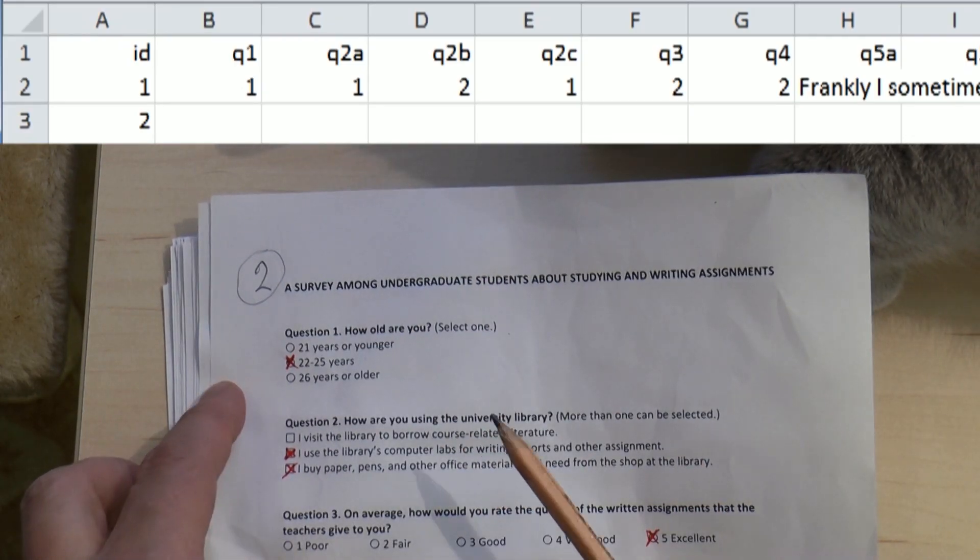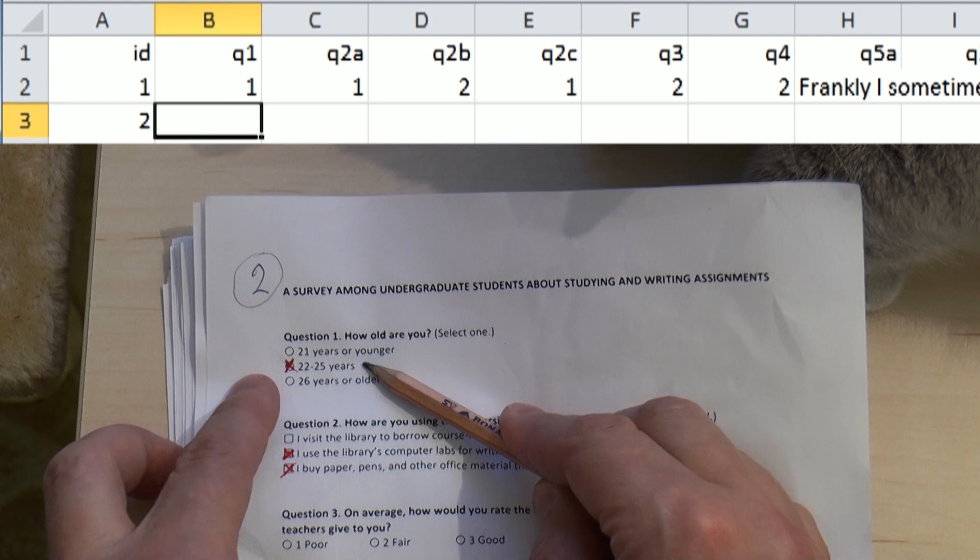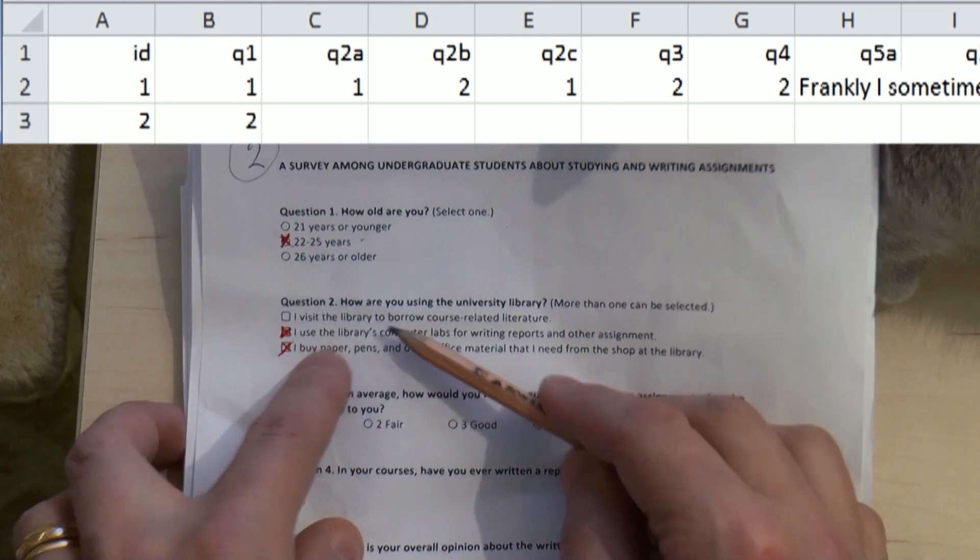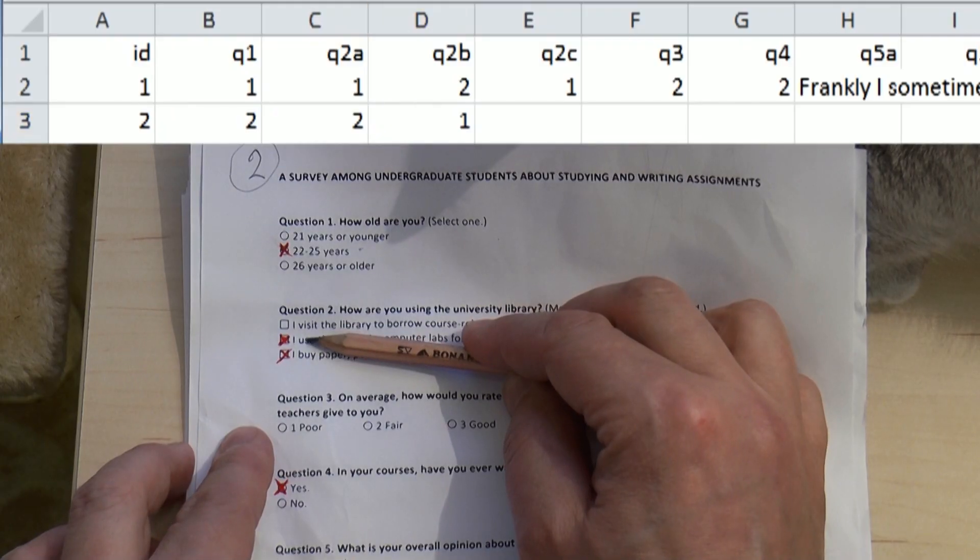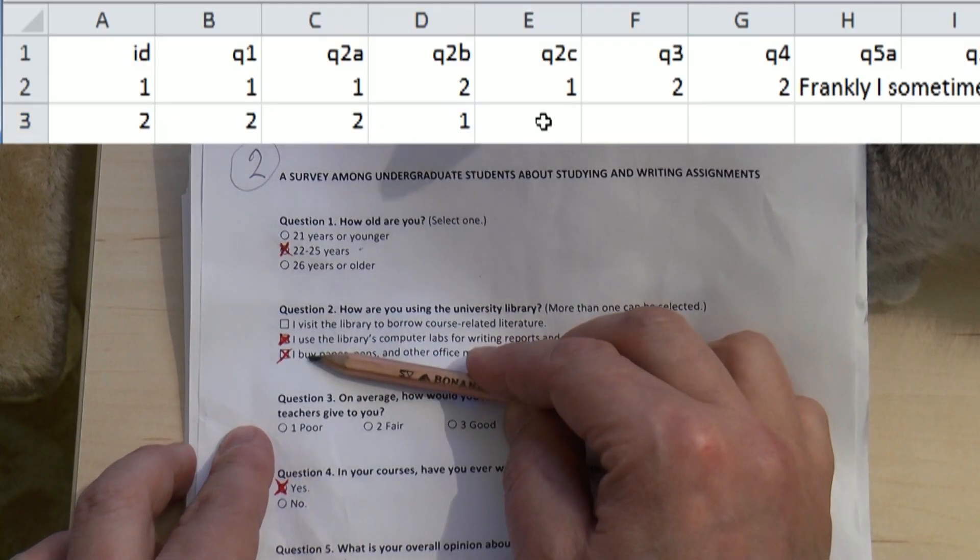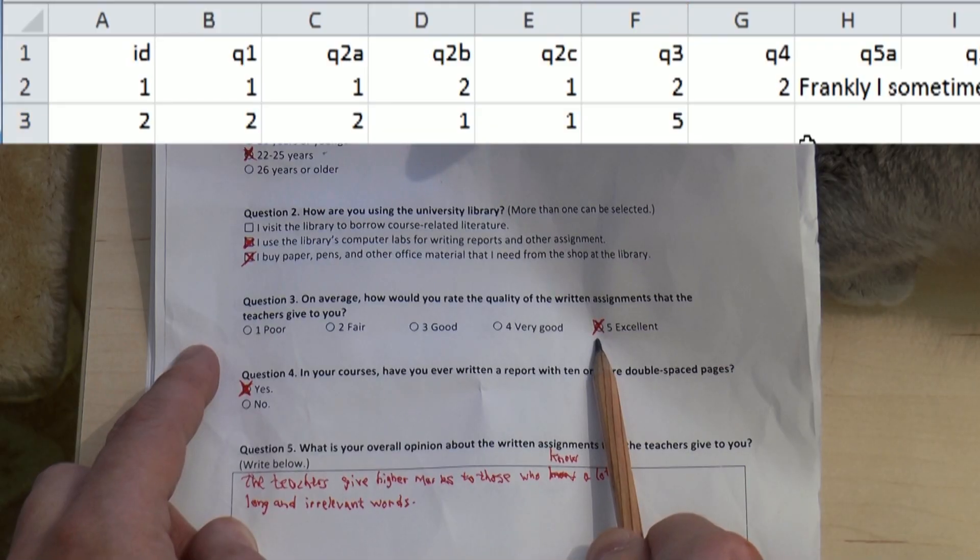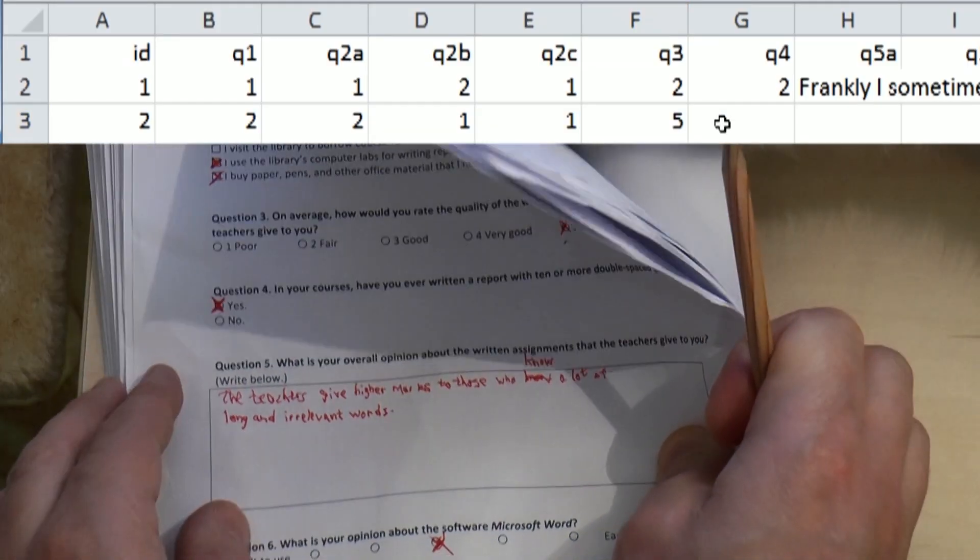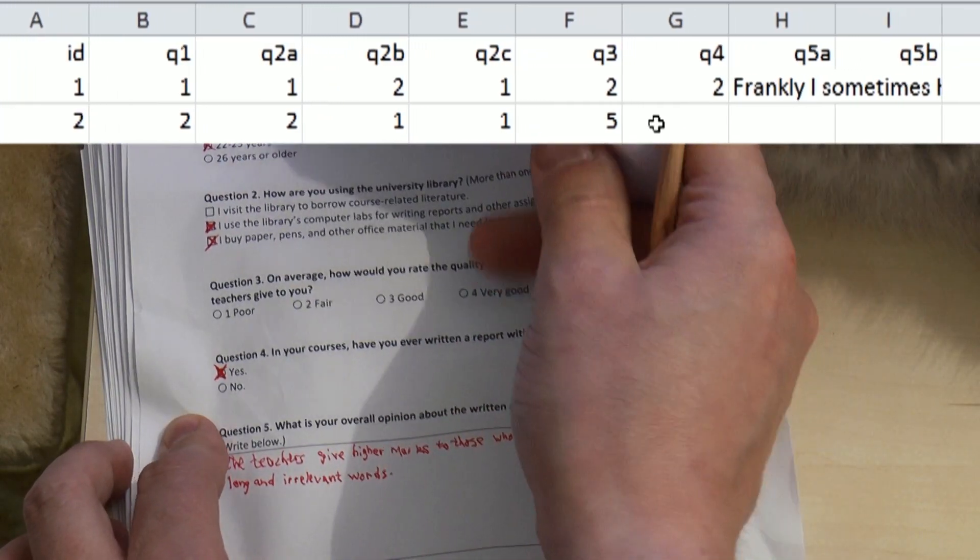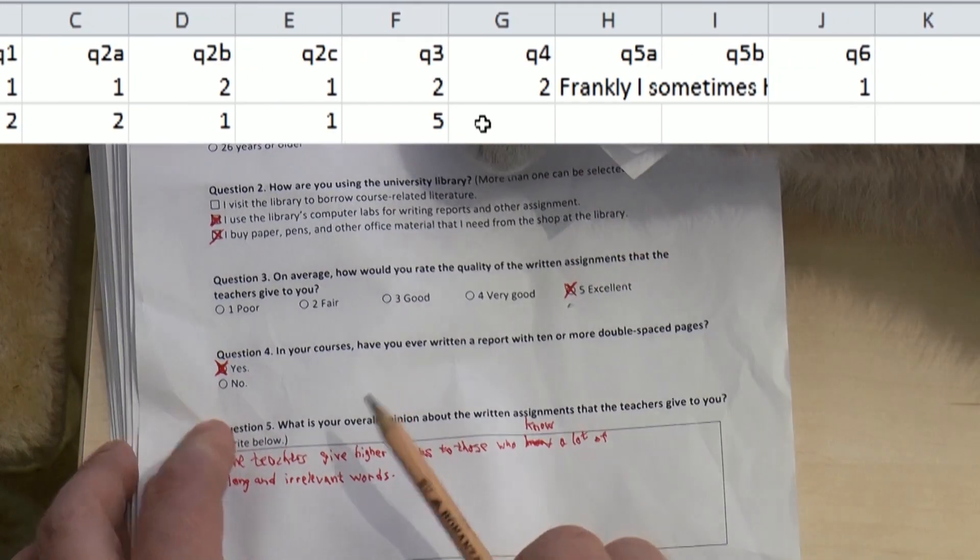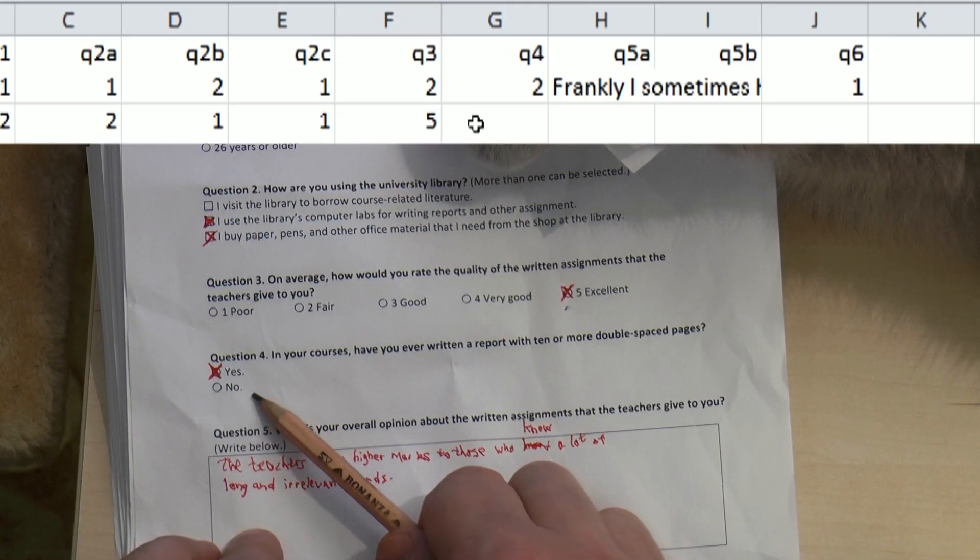Q1 is coded with the digit 2. Q2A is a 2. Q2B is a 1. Q2C is 1. Question 3 is 5. And question 4 is coded with the digit 1.